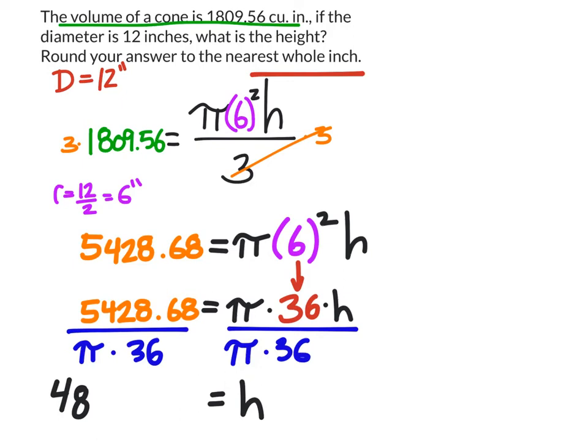To clarify, the pi and 36 were divided by themselves, which is 1, leaving h. Now to check our work, I'm going back to that equation: pi times 6 squared times h divided by 3. I'm going to replace h with 48, and I should get about 1,809.56.